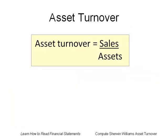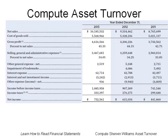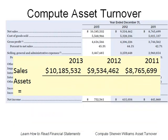The asset turnover ratio equals sales divided by assets. First we look to the income statement to find sales. Sales is on the first line and is $10,185,532,000 for 2013. Then we plug the sales figure into the top part of the fraction for the three years.